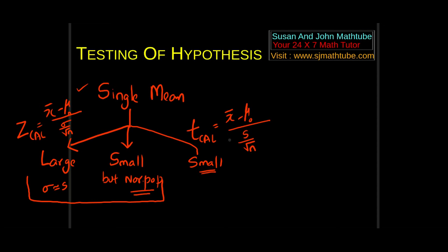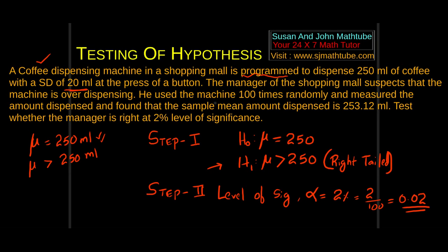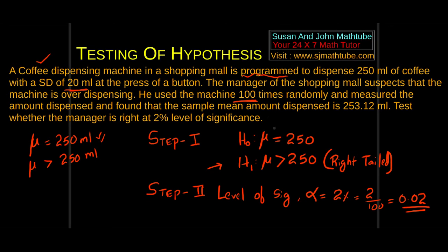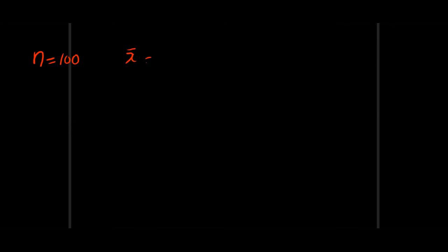Let's look at our test. The manager used 100 samples, so n = 100. The sample mean x̄ = 253.12, and sigma is given as 20. n = 100 means large sample.